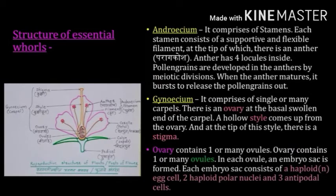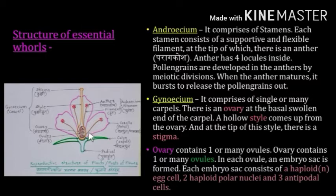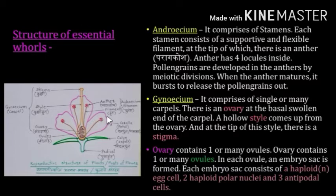Now we are going to study the structure of the essential whorls. The androecium comprises stamens. Each stamen consists of a thin filament-like structure called the filament, and at the tip there is an anther. The anther has four locules inside it, which can be seen when cut transversely. Pollen grains are developed in the anthers by meiotic divisions. When the anther matures, it bursts to release the pollen grains.